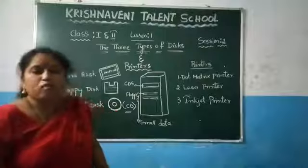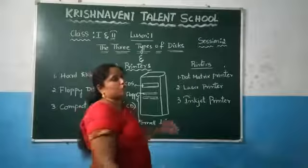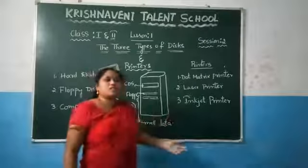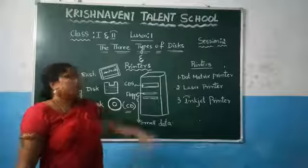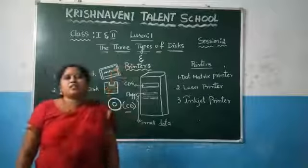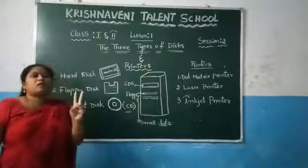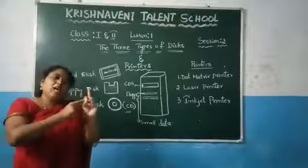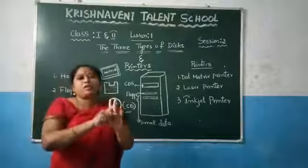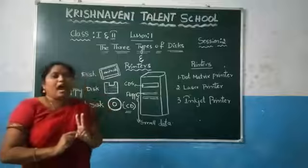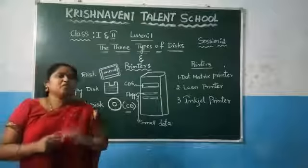So with the help of these printers we will take out the printout of any information. It may be a letter, it may be question answers, it may be a picture also. Overall in this lesson, children, computer is a fast and accurate machine. It works fast and the results given out by the computer will be accurate. And computer is also a versatile machine.